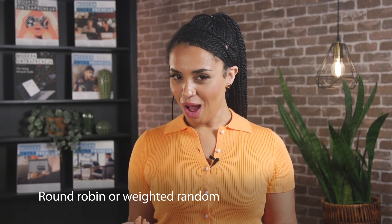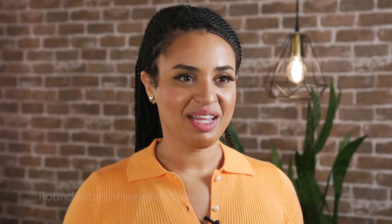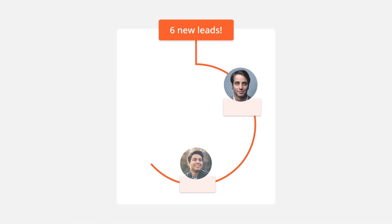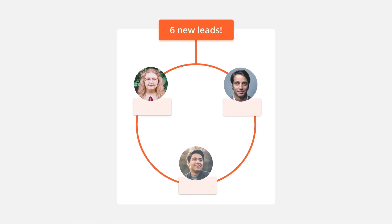You'll decide on a lead routing method to use: round-robin or weighted random. Round-robin lead routing evenly divides leads between team members in the order that they enter your system. This is good for sales teams that want to divide and conquer as quickly as possible. So if you have three sales reps — Sam, Jose, and Kelsey — the first incoming lead will go to Sam, the second to Jose, and the third to Kelsey, repeating in that same order.